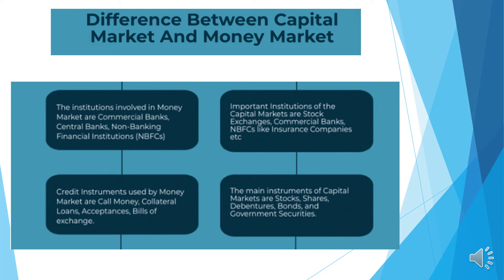Next, credit instruments used by the money market are call money, collateral loans, acceptance, and bills of exchange. On the other hand, the main instruments of capital markets are stocks, shares, debentures, bonds, and government securities.